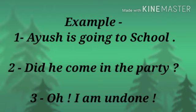Did he come in the party? We can notice that the formation of this sentence is changed. It is asking a question and ending with a question mark, and it is also giving complete meaning, so it is called a sentence. Third example: Oh, I am undone. It is ending with an exclamation mark and the intonation is again changed. It is another kind of sentence.